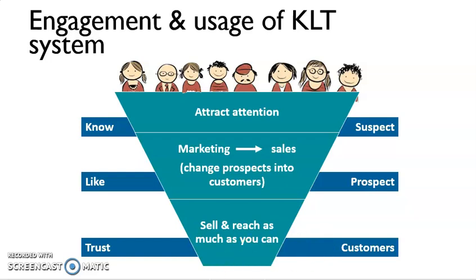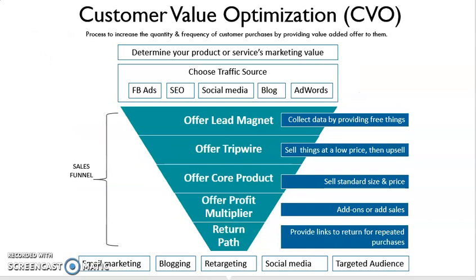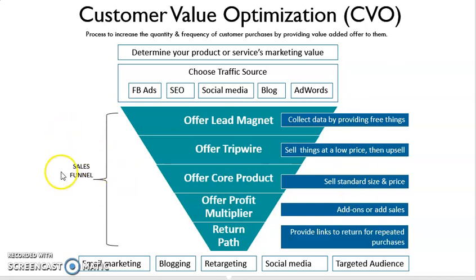The second method I want to explain is CVO — Customer Value Optimization. It's a process to increase the quantity and frequency of customer purchases by providing value-added offers to them. For this method, we are trying to create more customers. You can see this is a step-by-step method. We use a sales funnel to do it.